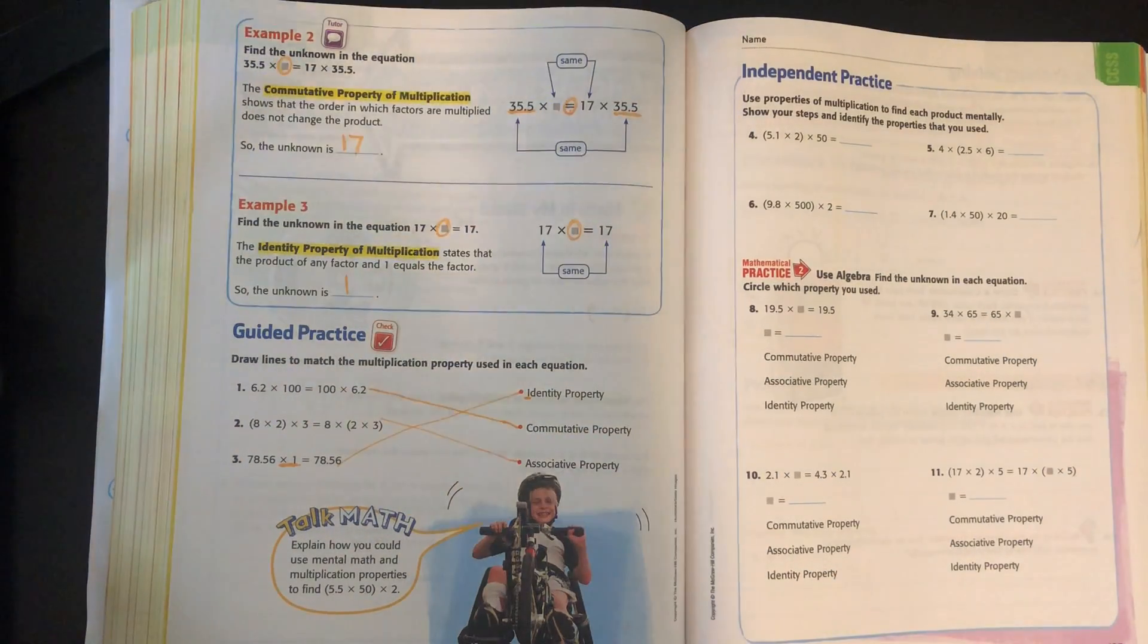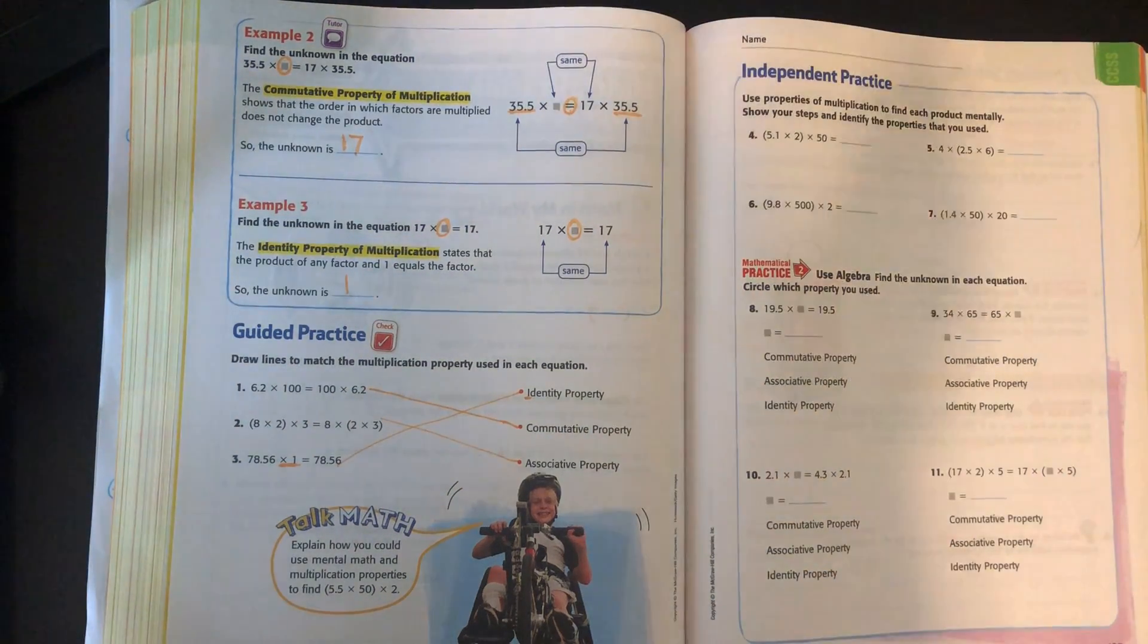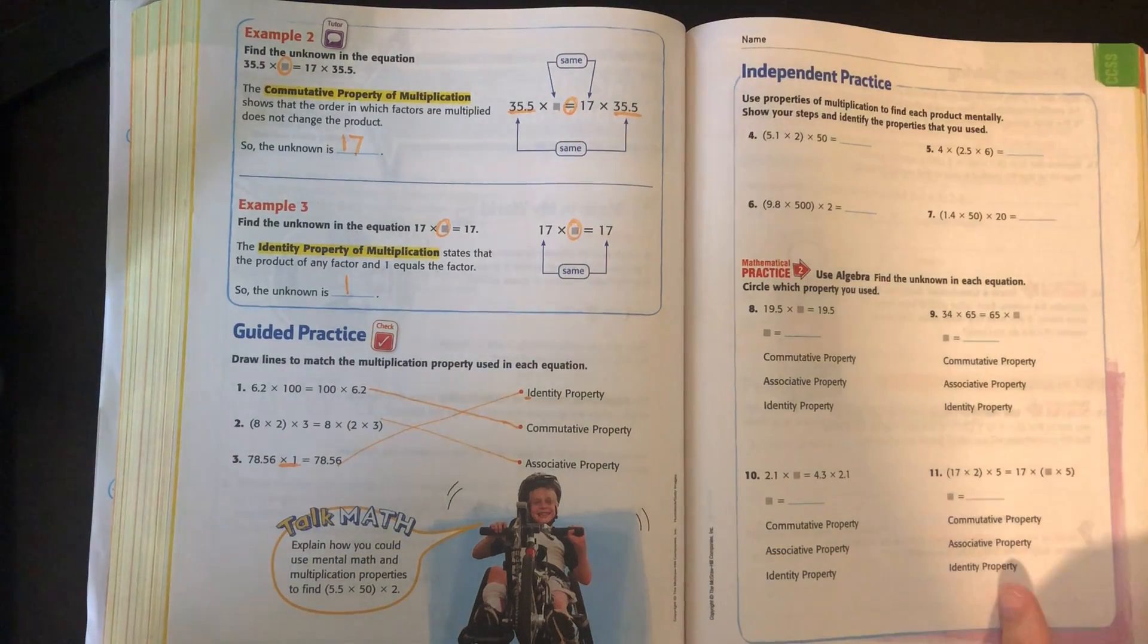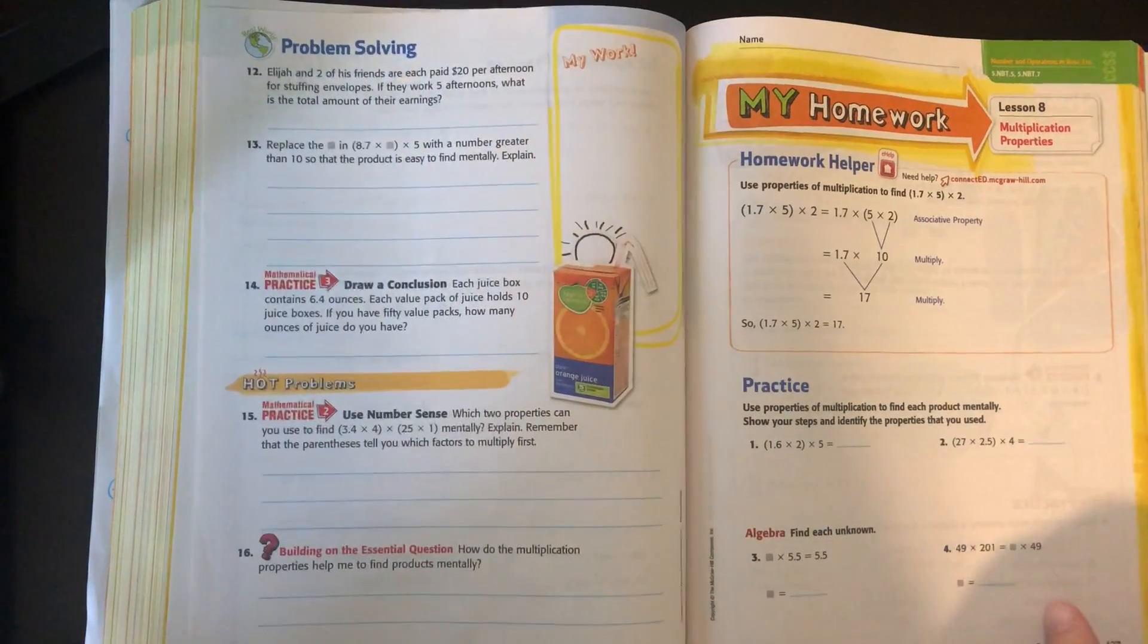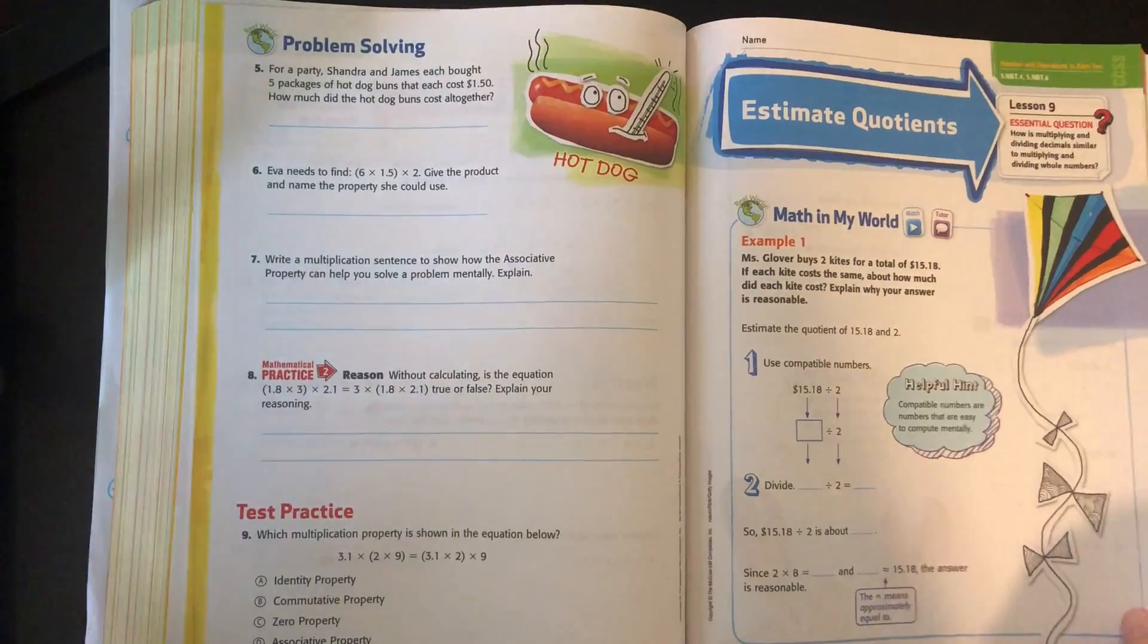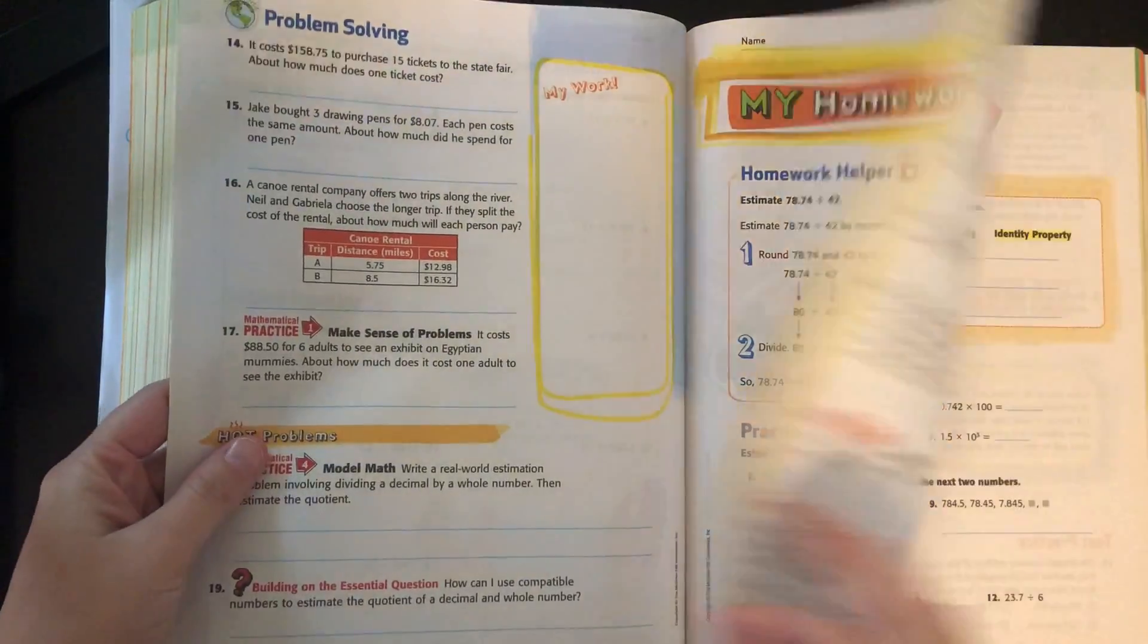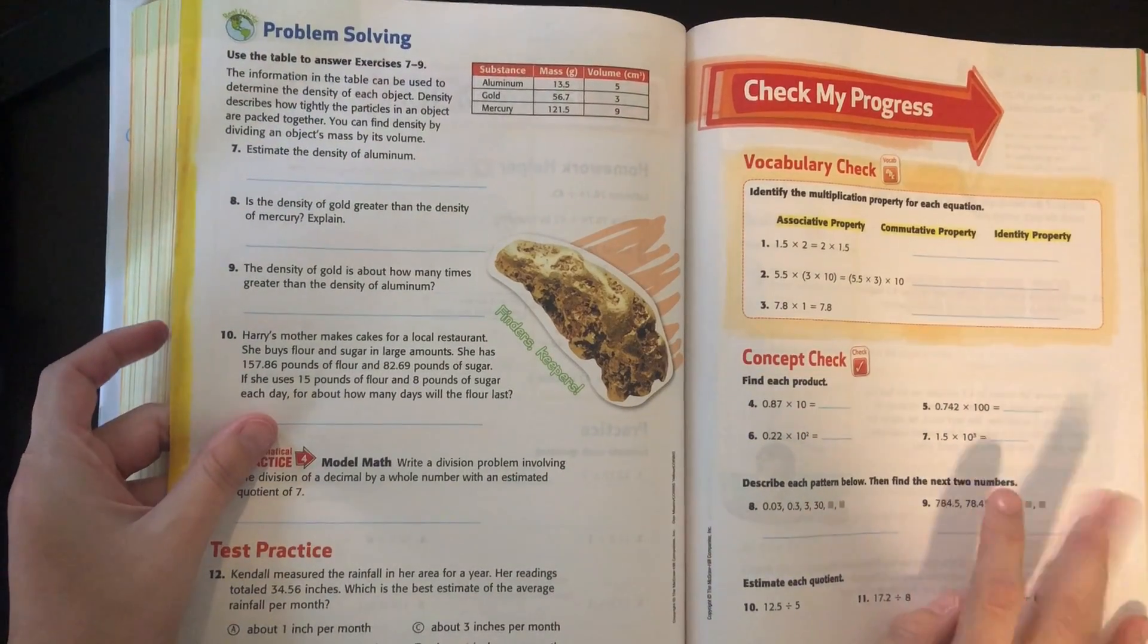So, you have a couple of pages of practice in your book, and you have a couple of pages on canvas to work on as well. If you have any questions or need any help, please let me know. After you complete this, we're going to skip the estimating quotients because you know me in estimating, but you have a check my progress.